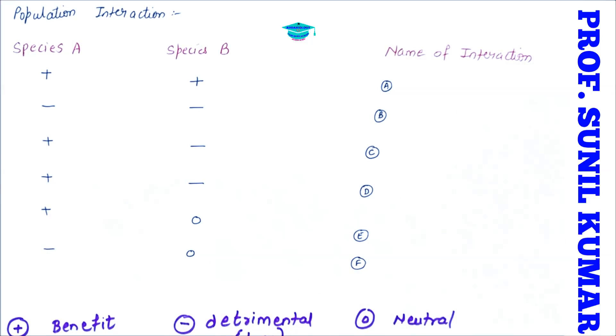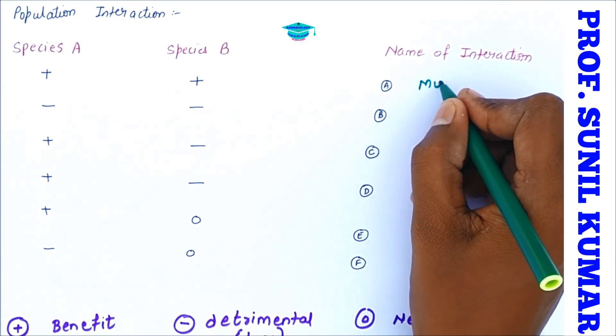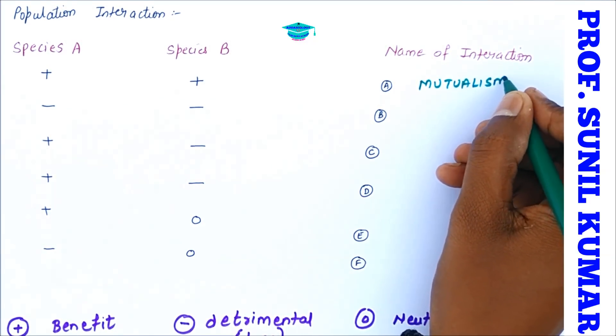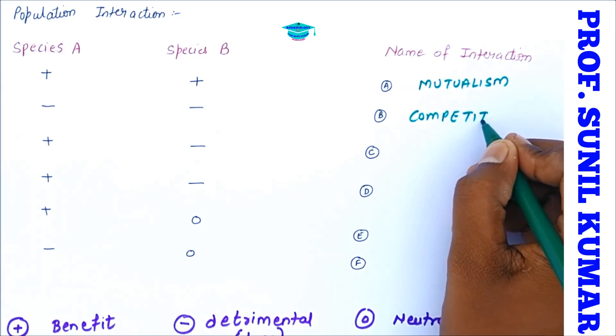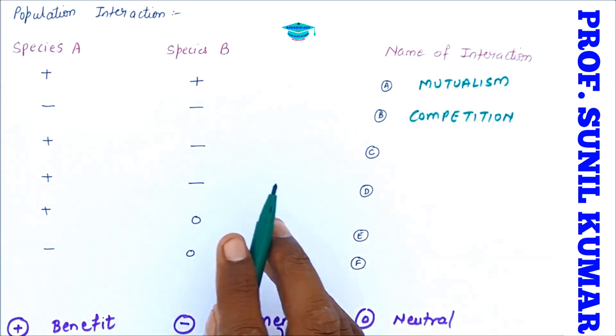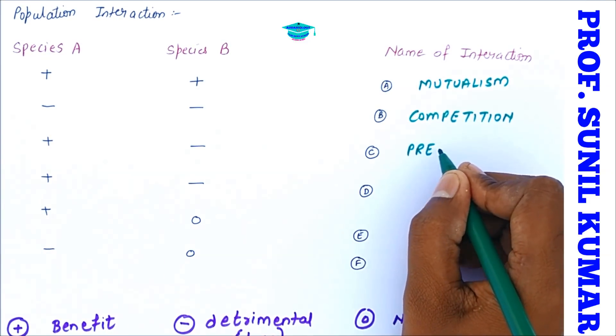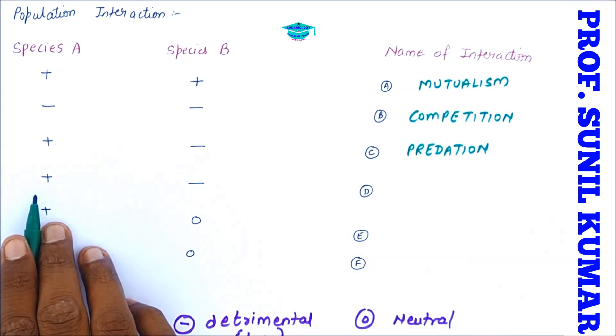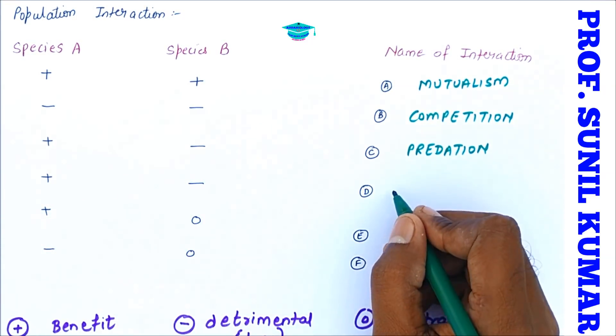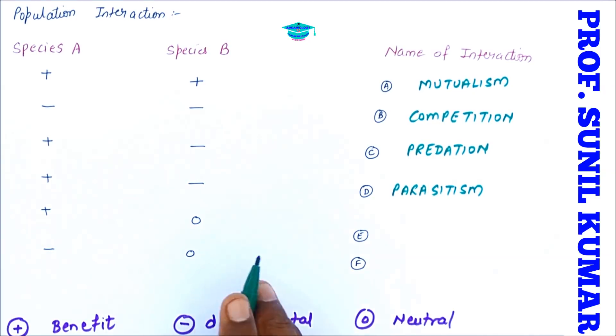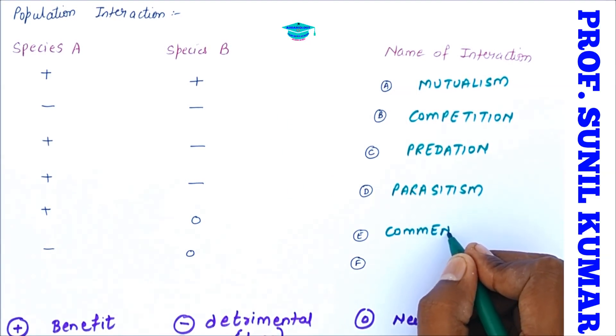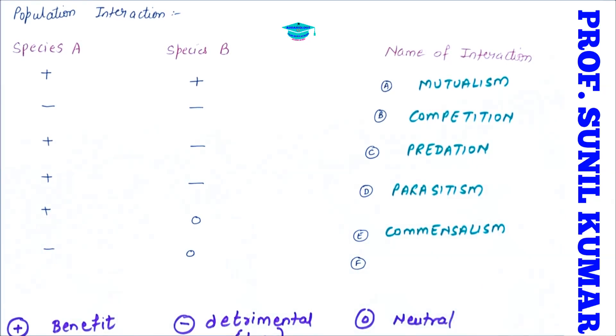Look at the first one: it says plus plus, it means both the species A and species B are getting benefited. It is mutualism where both get benefit from each other. The second one: minus minus, both the species are getting harmed. It's competition. When one species is getting benefited and the other species getting harmed, it is called predation. When one species is getting benefited and the other species getting harmed, it is called parasitism. The difference between predation and parasitism is: in predation one will be killed, but in parasitism both will survive. In another case, one is plus, another one is neutral. It is commensalism. One gets benefited, the other neither gets benefited nor harmed. But look at this one where one is getting harmed, another one is neutral. This is called amensalism.